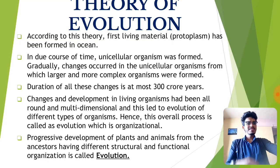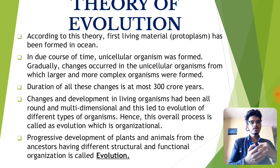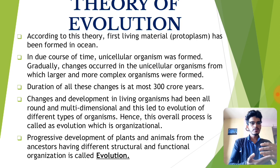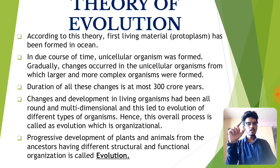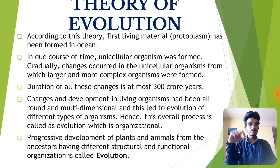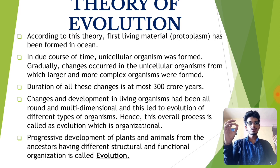There are different theories which explain evolution, and the gradual theory of evolution is widely accepted. The theory of evolution states that the first living organism found on Earth's surface was protoplasm, and it was found in the ocean. Over time, unicellular organisms were formed. Gradual changes in unicellular organisms led to larger and more complex organisms, and the duration of all these changes spans at most 300 crore years.